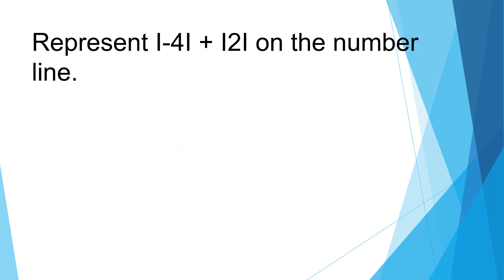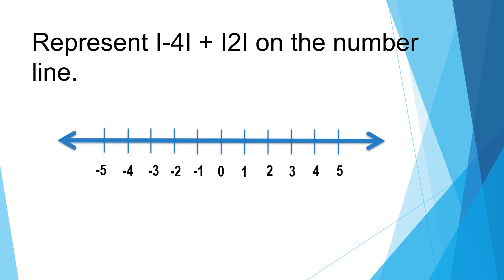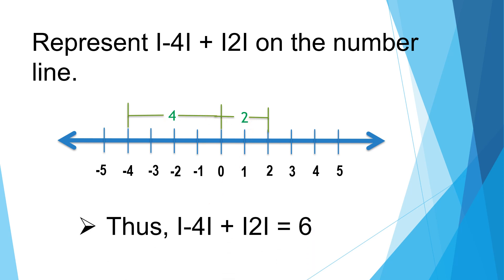Represent the absolute value of negative four plus the absolute value of positive two on the number line. What is the distance of negative four from zero? One, two, three, four. What is the distance of positive two from zero? One, two. Four plus two is equal to six. Thus, absolute value of negative four plus absolute value of positive two is equal to six.